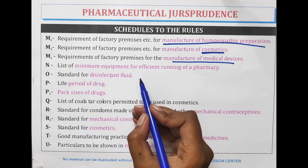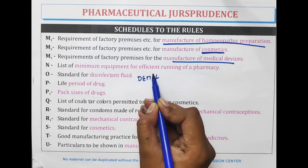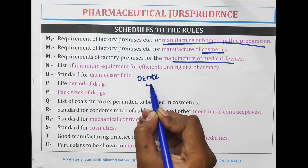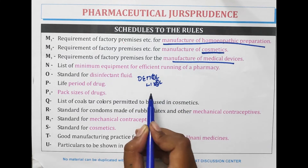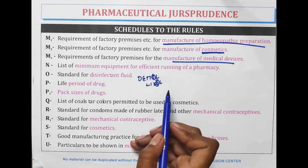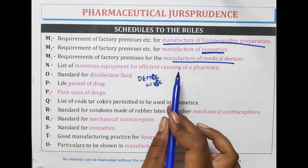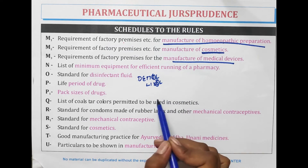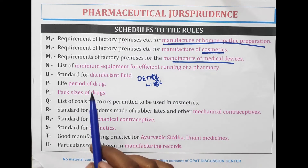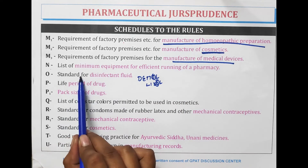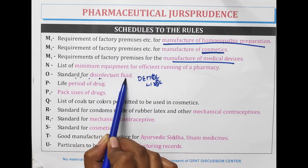Schedule O — think of Dettol and Lysol. These are disinfectants. Dettol is antiseptic but for remembering we can consider it a disinfectant. So Schedule O contains standards for disinfectant fluids.